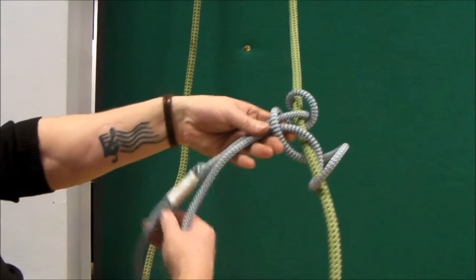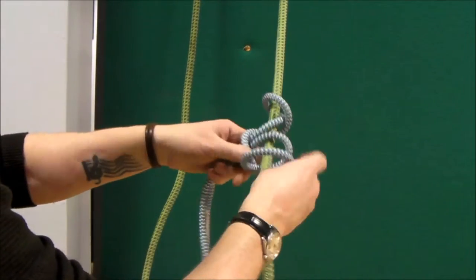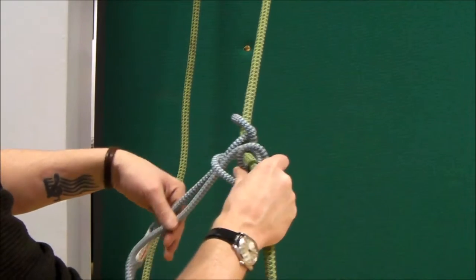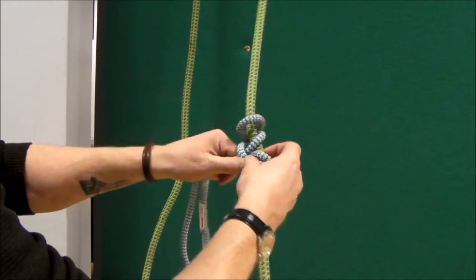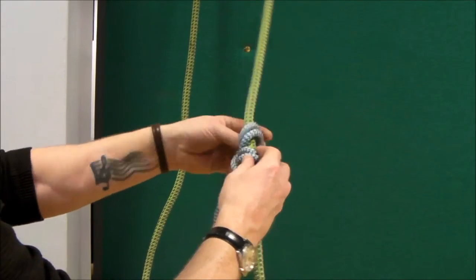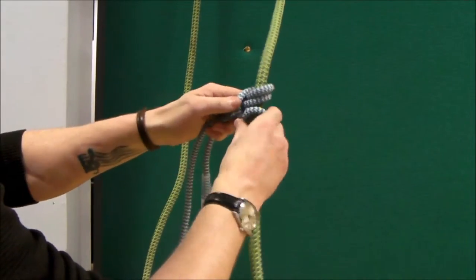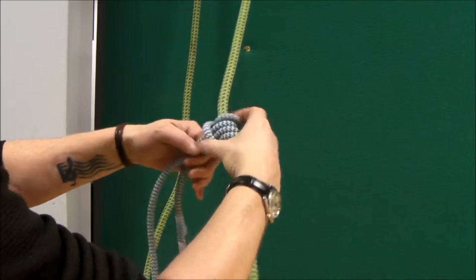Which leaves you with, at least with a Prussik loop this long, a little bit of a tangle looking, but it's not really. All you need to do is dress the knot. So tighten it and make sure all the rope's pulled through on this side. And when it's somewhat dressed, it should start to look like this.